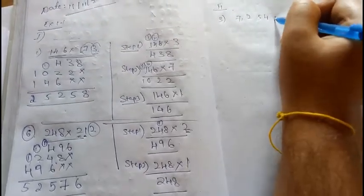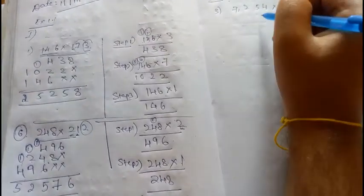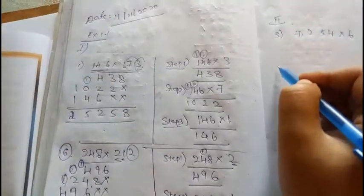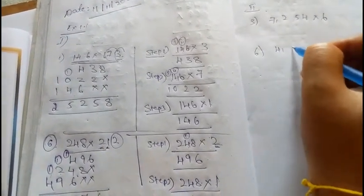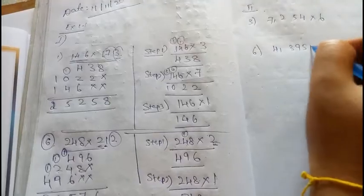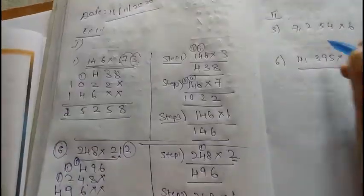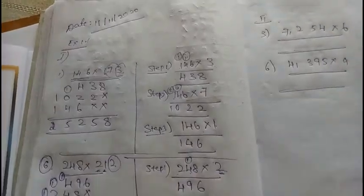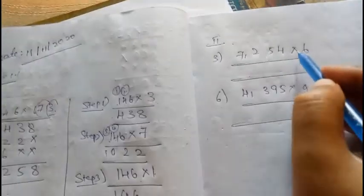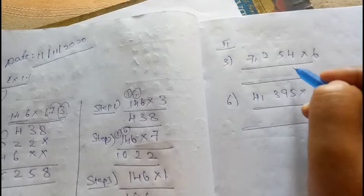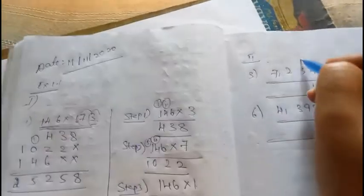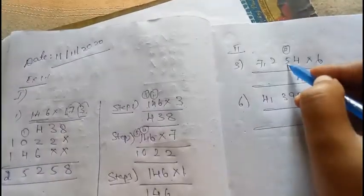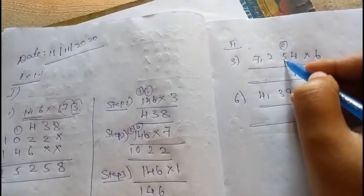In the third question we have 7,254 into 6, and in the sixth question you have 4,395 into 9. We need to solve this first. Let's solve: 6 times 4 is 24, 2 carry. 6 times 5 is 30, plus 2 is 32, 3 carry.